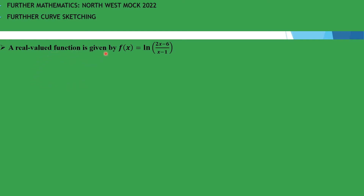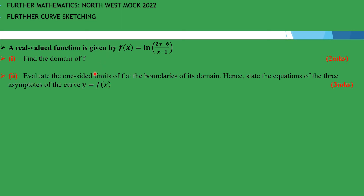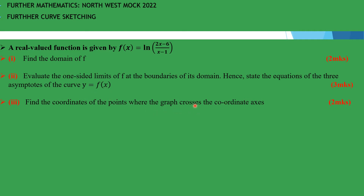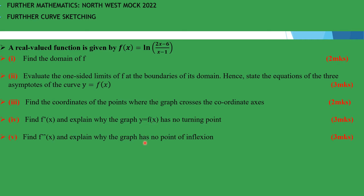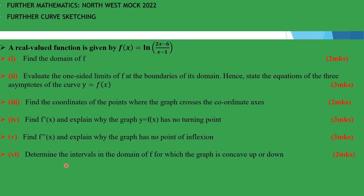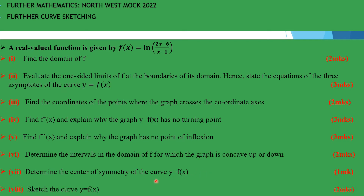A real-valued function is given by f(x) = ln((2x-6)/(x-1)). Roman I: find the domain of f. Roman II: evaluate the one-sided limits at the boundaries of the domain, hence state the equations of the three asymptotes. Find the coordinates where the graph crosses the coordinate axes, find f'(x) and explain why there is no turning point, find f''(x) and explain why there is no point of inflection, determine the intervals of concavity, determine the center of symmetry, and sketch the curve.